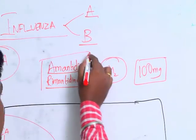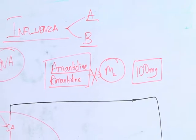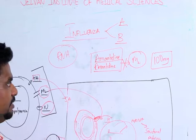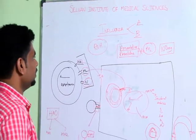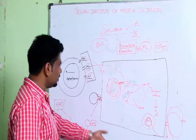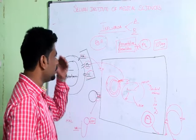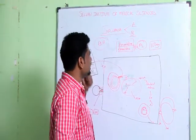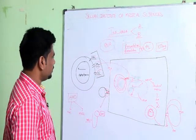Another important use of amantadine is in Parkinson's disease. However, the influenza virus later mutated its M2 channels in response to these drugs, rendering amantadine and rimantadine ineffective. These drugs thus developed resistance in the case of influenza.